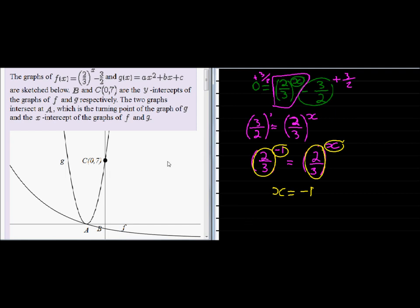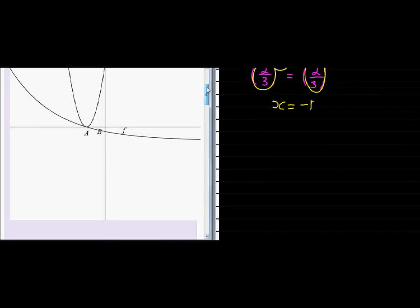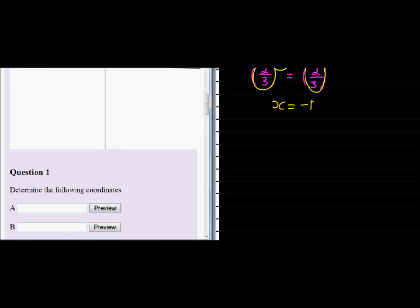So let's put in that information. That's now A. For A, which is the x-intercept for the exponential function, x is negative 1 and y is equal to 0.